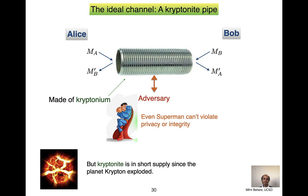Suppose we think about how to achieve something like this and imagine we have physical resources at our disposal. We can imagine a perfect implementation of security as a pipe — made out of some impenetrable material, call it cryptonium. When Alice puts something in at one end, it pops out unmodified at the other end: M'_A equals M_A, and vice versa for Bob. Given that this material is impenetrable, even an adversary as powerful as Superman cannot violate either privacy or integrity. Nobody can see inside the pipe or alter what's sent inside it. As a thought experiment, this is a valuable metaphor for what we're trying to achieve.